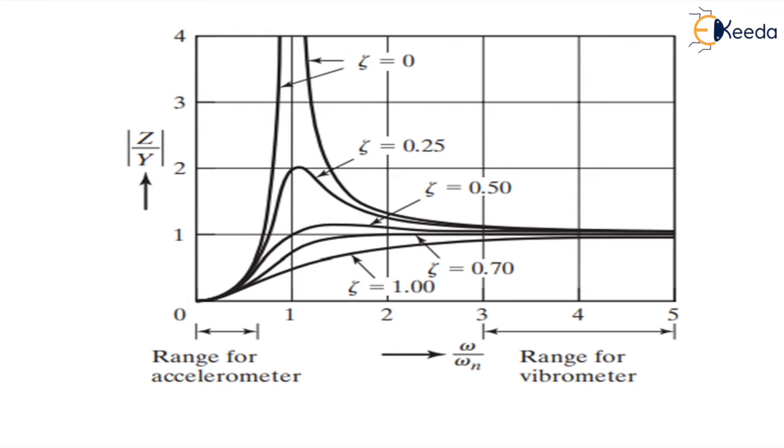If we plot a graph between r, which is omega upon omega_n, keeping it on x-axis and z upon y on y-axis, we see that the range of accelerometer, we know r should be less than 1 or somewhat equal to 1, so this is the range of the accelerometer and we see that z is y into omega upon omega_n or y into r because we are saying that r is very less so the denominator becomes a very small quantity.